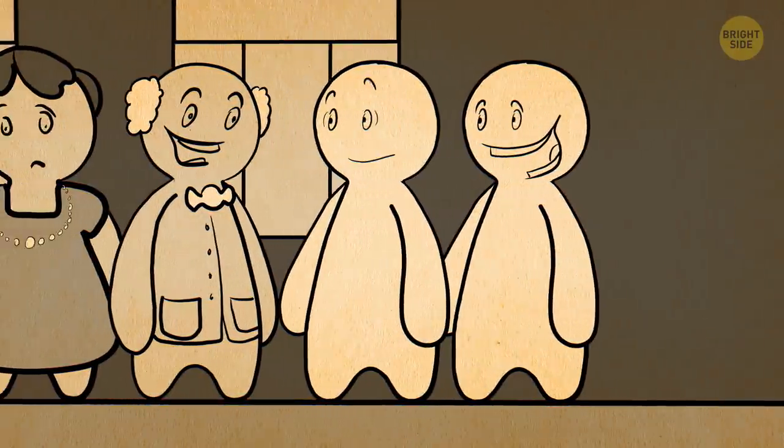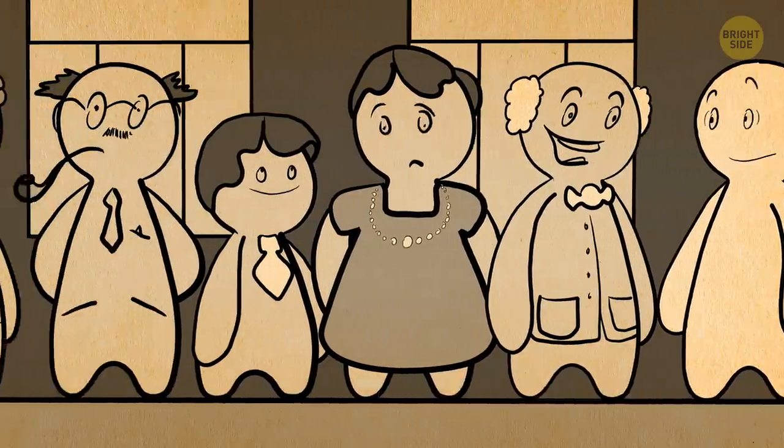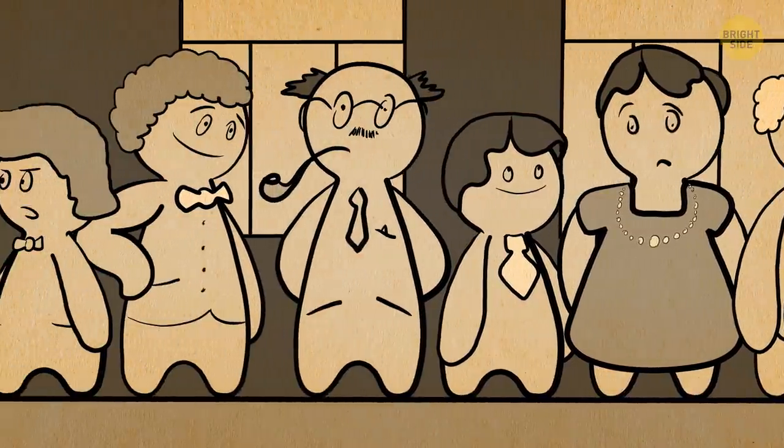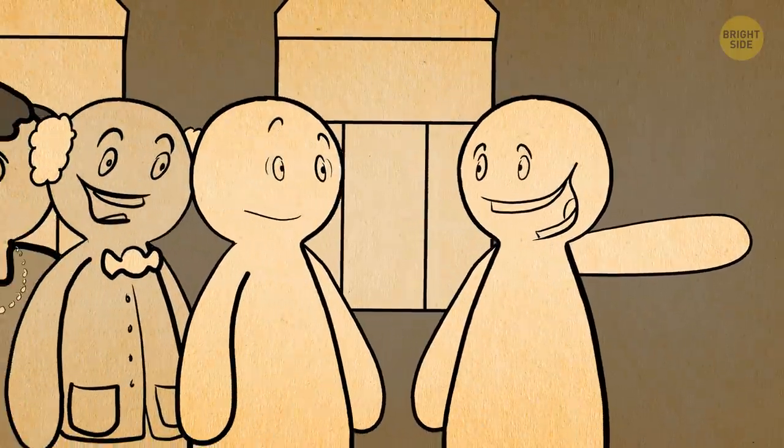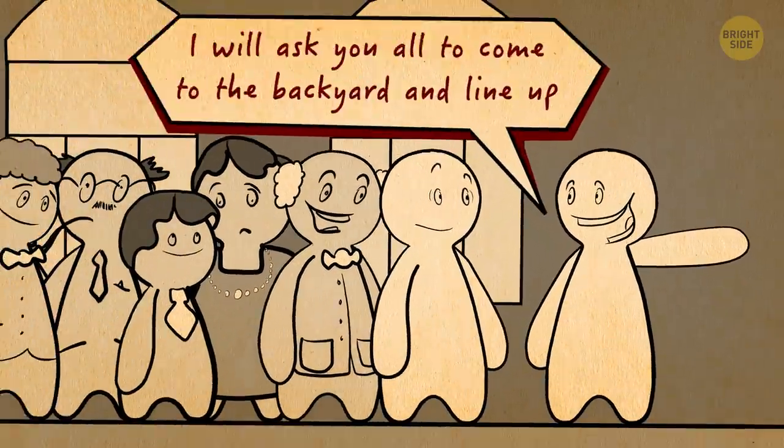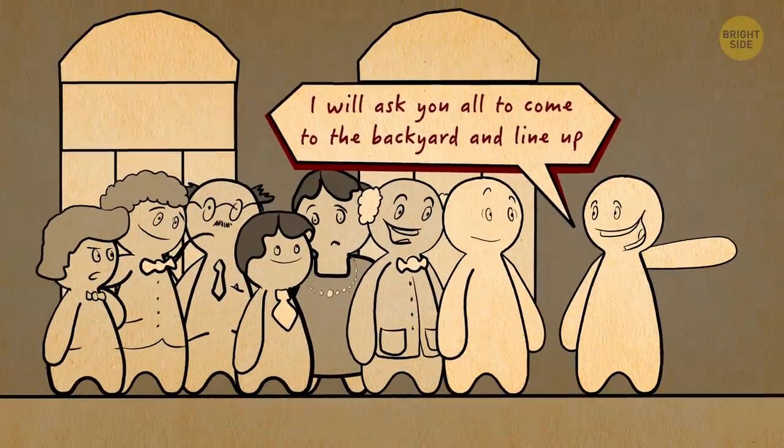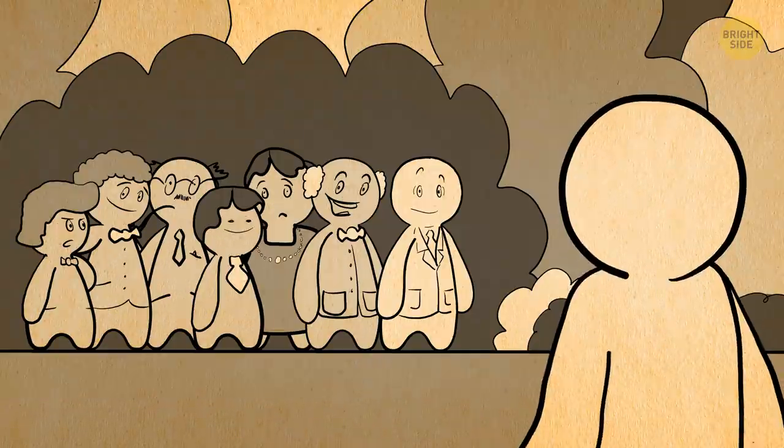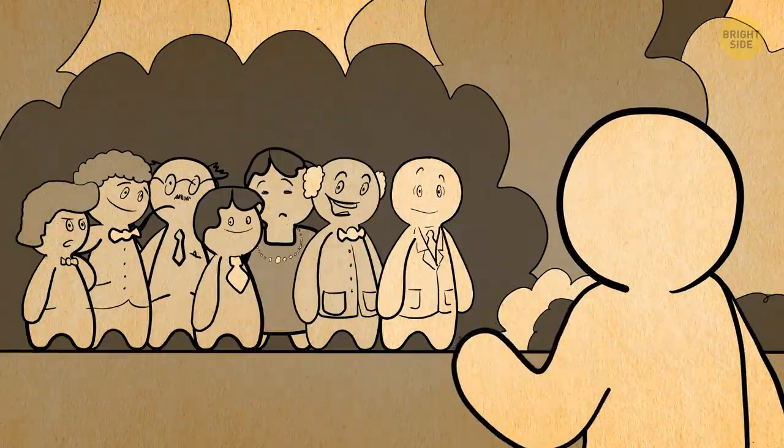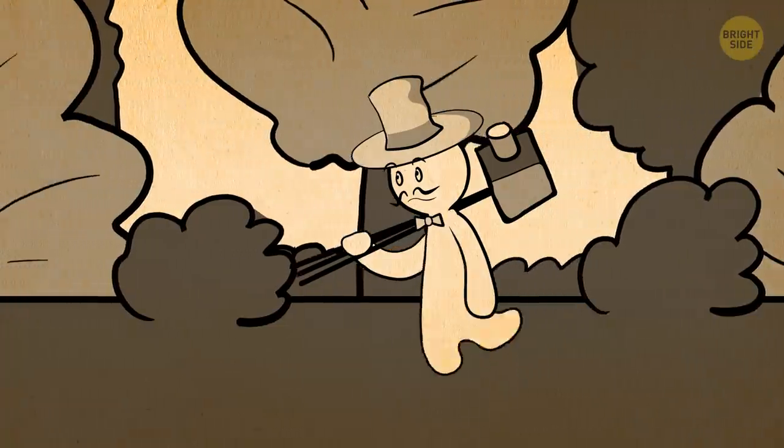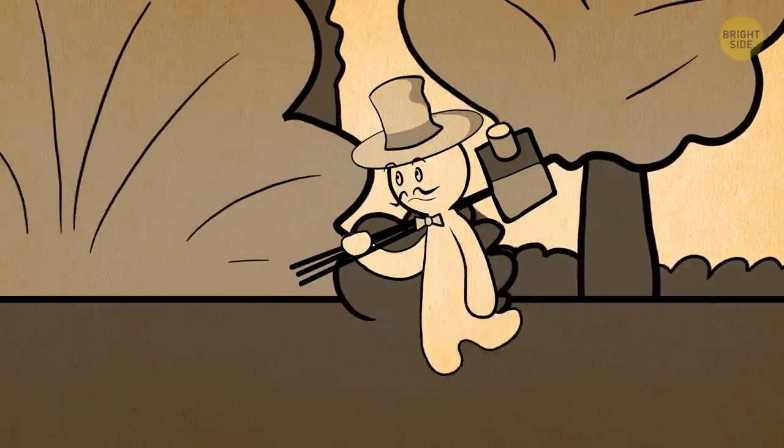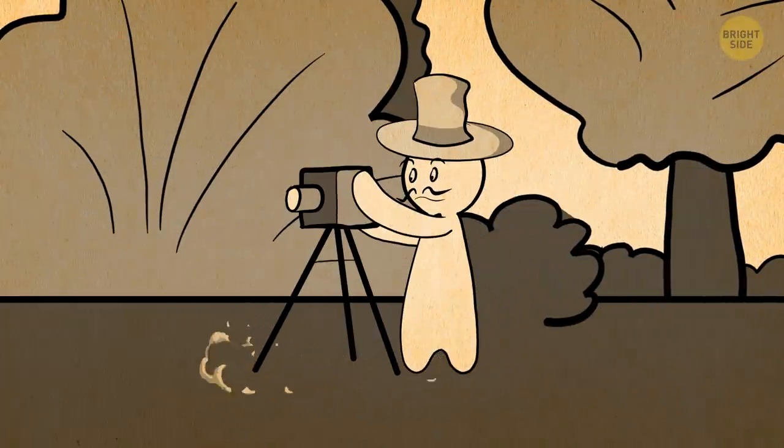There, you meet his family. Everyone is wearing beautiful outfits, and you take your Persian suit out of the suitcase. Your friend invites you all to the backyard. He lines everyone up. You don't understand what's going on, but you do what he says. You'll have to wait for a little while, he says. Wait for what? You're asking. At this moment, a tall man appears near the crowd with a strange tripod device.